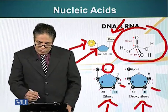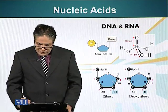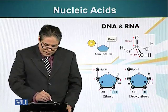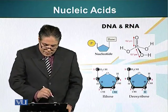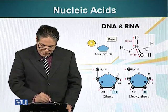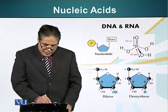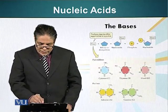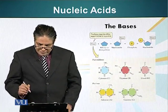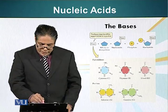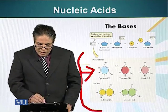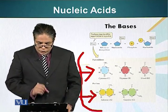Now let's look at the structure of nitrogenous bases. These nitrogenous bases are cyclic compounds. They can be divided into two groups depending upon their structure: the pyrimidines and purines. Pyrimidines have one cyclic structure, whereas purines have two cyclic structures fused together.